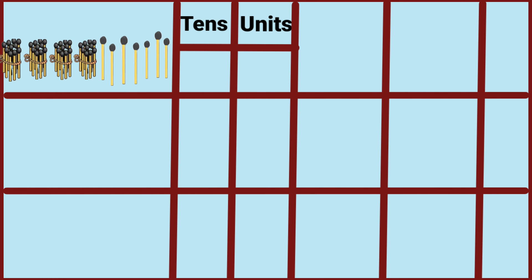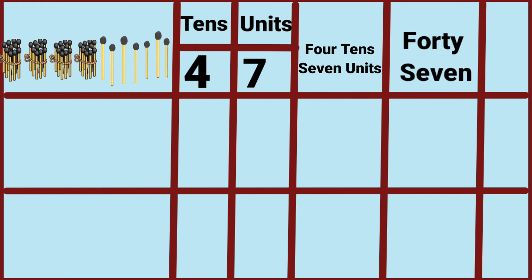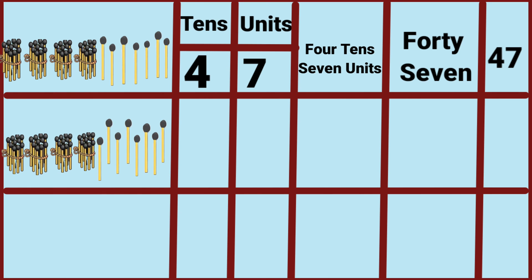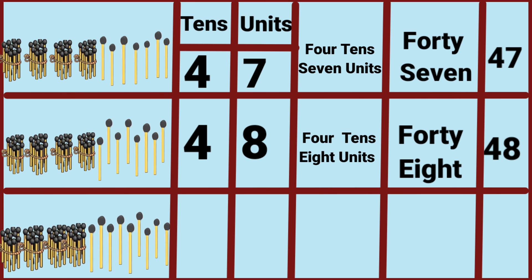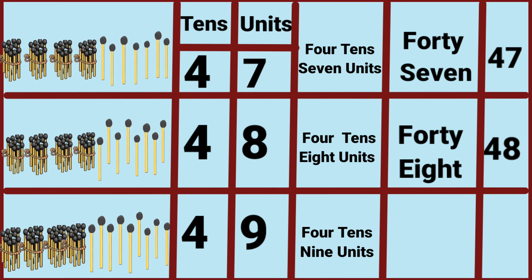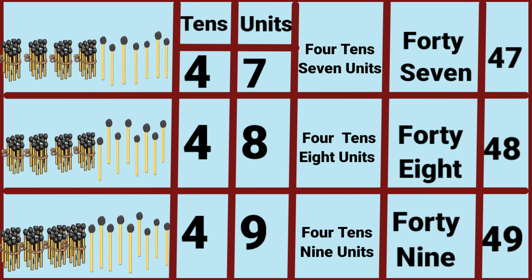Four tens and seven units makes forty-seven. Four tens and eight units makes forty-eight. Four tens and nine units makes forty-nine.